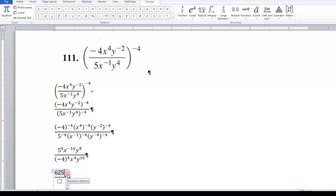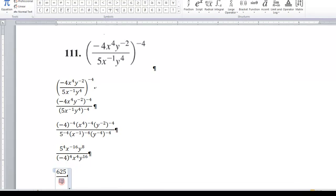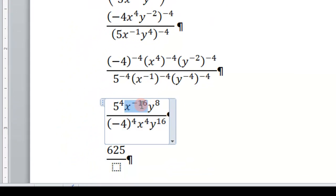And then I've got x to the, I'll have to bring this x to the negative 16th down. Let's make that, let's grab it here. Copy it. Put that down here. And that's going to make it x to the positive 16th. And I'll have the x to the 4th and y to the 16th.